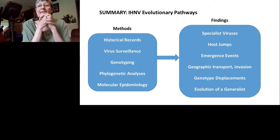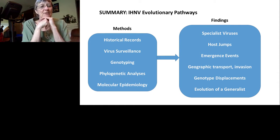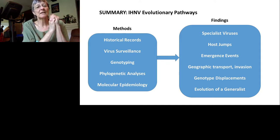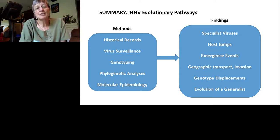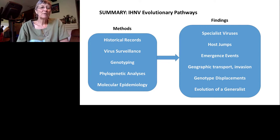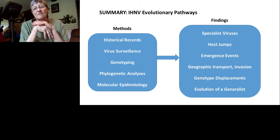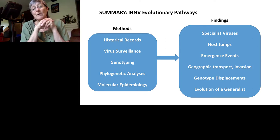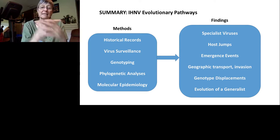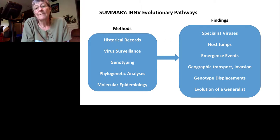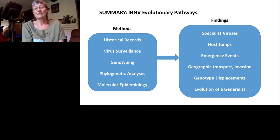In summary, from field data we've seen that IHN generally evolves as specialist viruses, but has also undergone host jumps, emergence events, geographic transport, and genotype displacements. Most recently, we observed evolution of a generalist from a specialist ancestor. In controlled wet lab experiments, specialist lineages show higher fitness and virulence in their host relative to non-specialists — a multi-trait difference. Generalist viruses are typically intermediate by several measures. The generalist UC shows reduced virulence in its former sockeye host but is not greatly increased in its new hosts — consistent with specialist-generalist theory predictions.